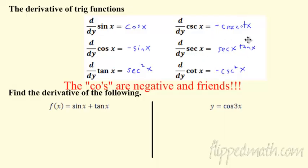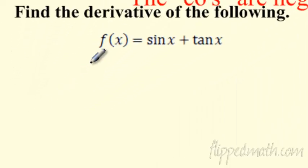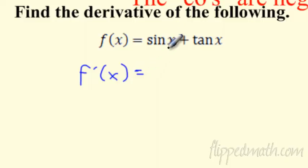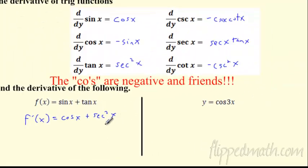You're going to have to memorize these for the test and for the AP exam. Just use the chart and try to memorize it — the more you use it, hopefully it sinks in. Let's use it now. What is the derivative of sine x plus tangent x? The derivative of sine is cosine. The derivative of tangent is secant squared. Done — good to go.